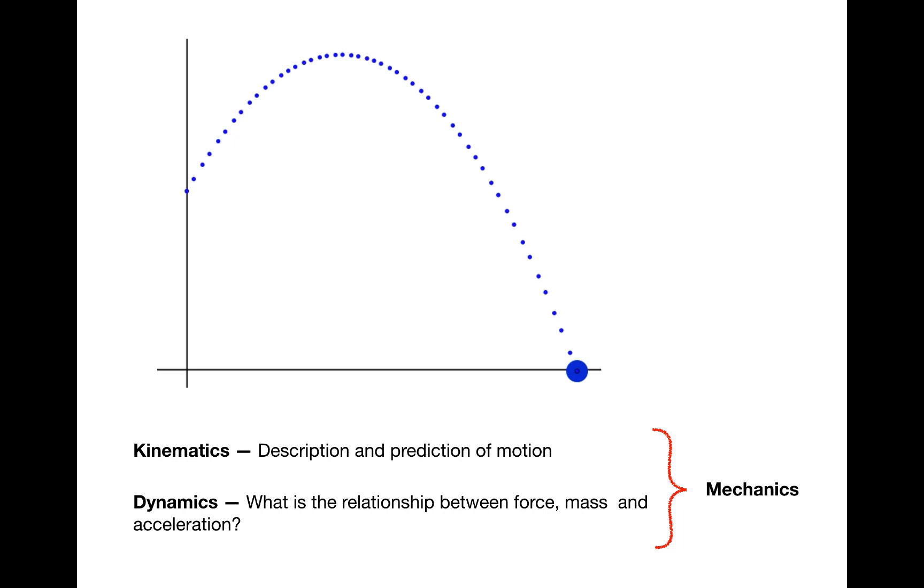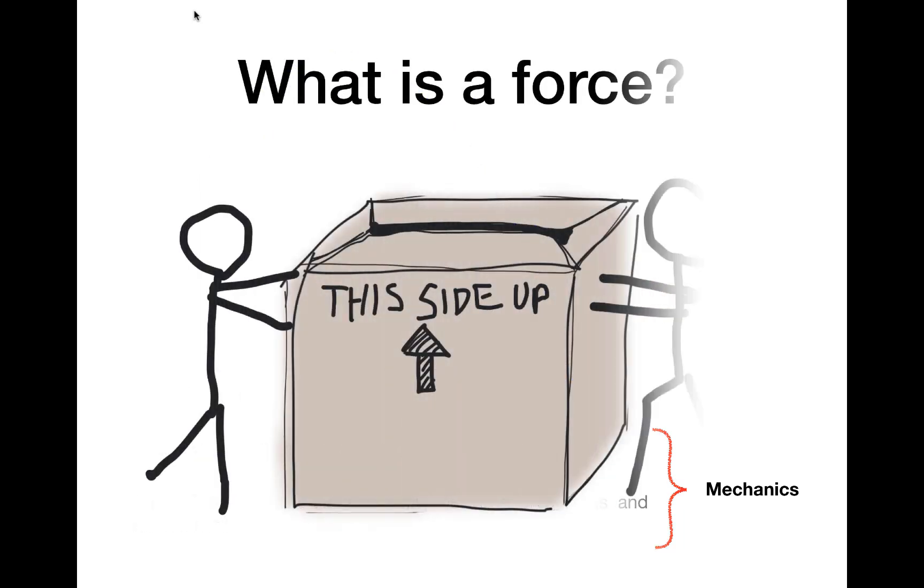Way back in 1687, Isaac Newton published three laws in the Principia that form the basis of classical mechanics. They're kind of like Euclid's postulates that you learn in a basic geometry course, in the sense that everything you learn in a mechanics course in physics can be traced back to these three laws, so they're important.